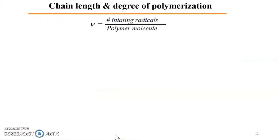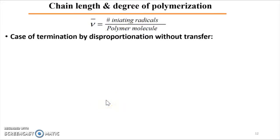To correlate the kinetic chain length with the degree of polymerization: the kinetic chain length is the length of the propagating active chain during polymerization, while the degree of polymerization is the length of the final dead polymer chain obtained after termination. To correlate these two quantities, we must consider both the type of termination and the possibility of chain transfer — with or without transfer.